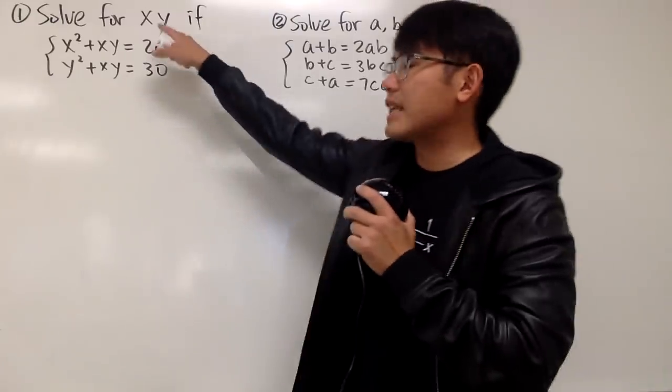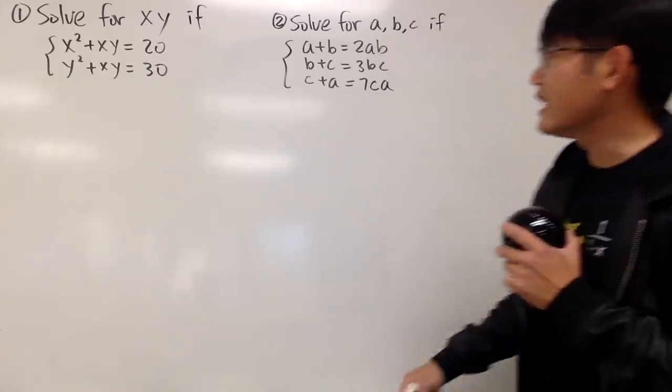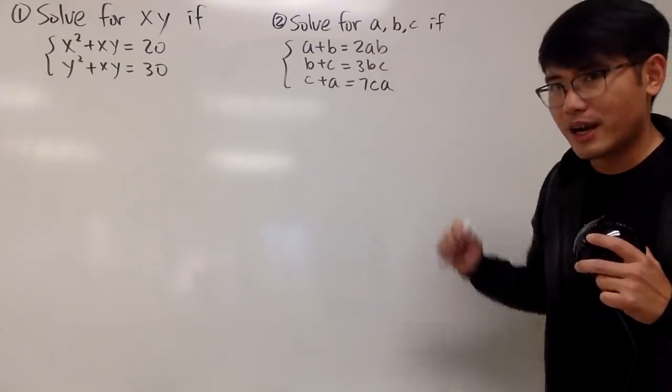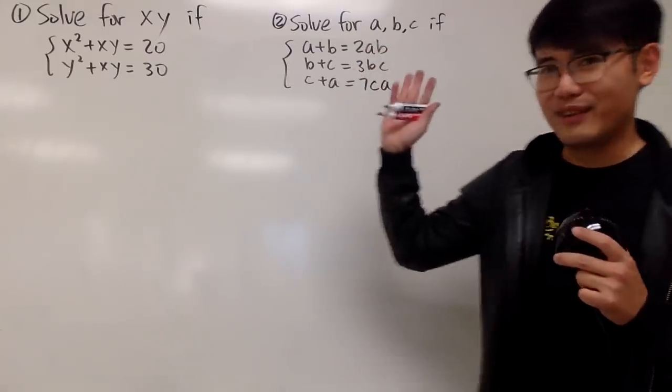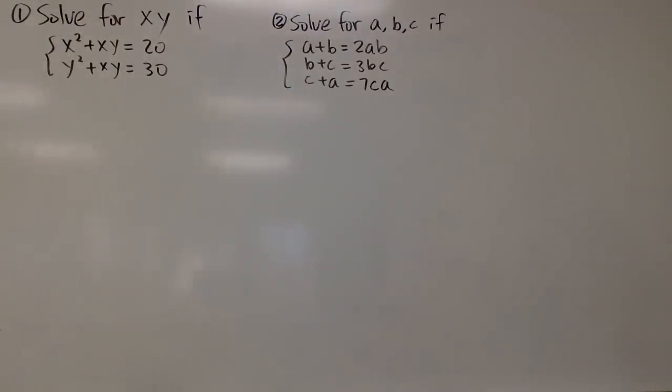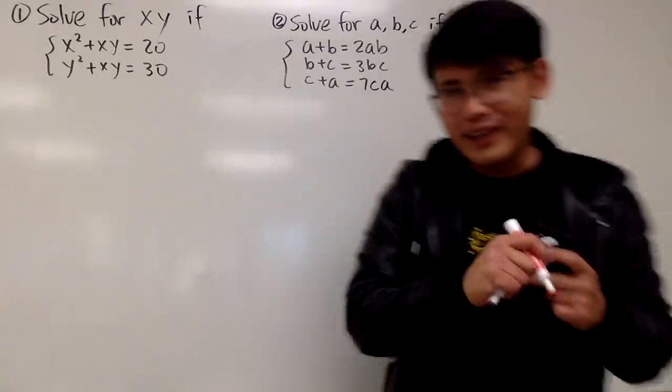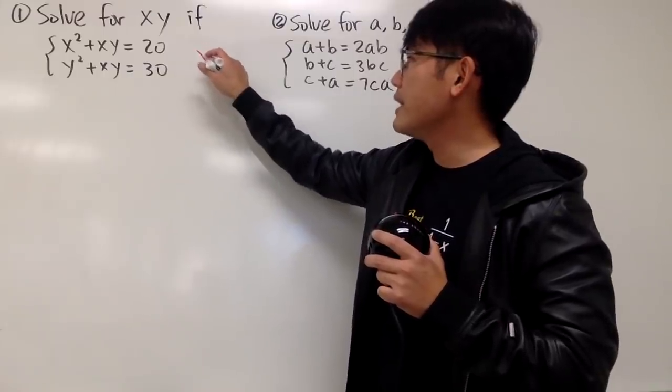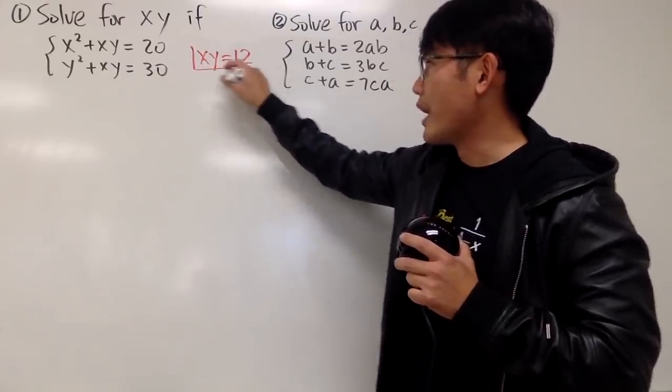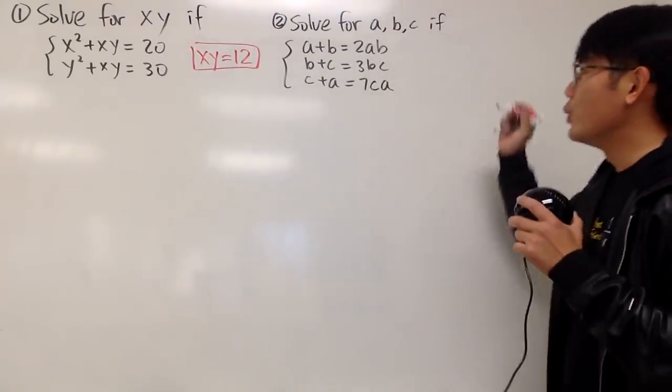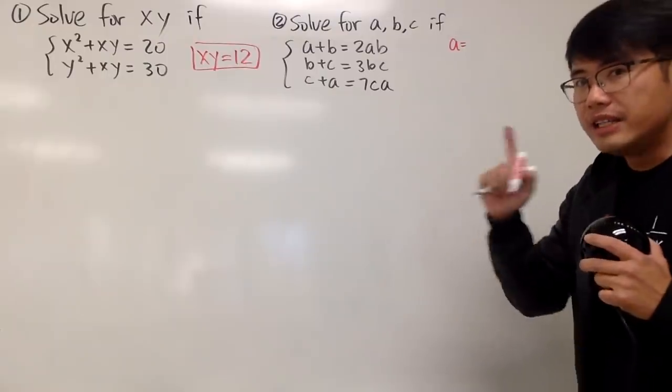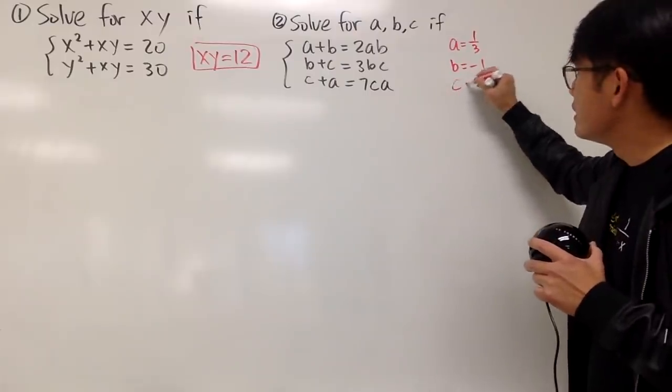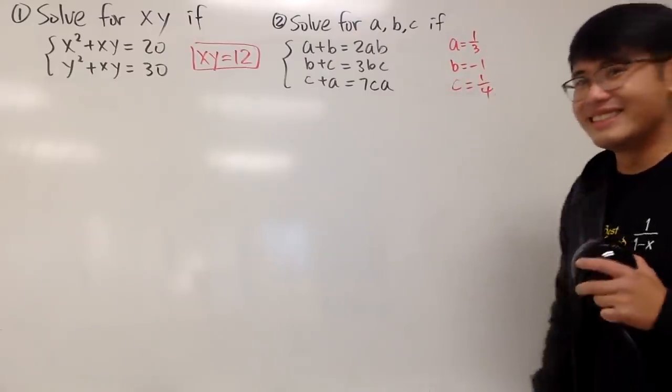Alright, for the first one, we are going to solve for x times y from this system of equations, and for the second one, we are going to solve for a, b, and c individually from this right here. And as always, please pause the video and try them first. Okay, hopefully you guys all have a chance to try it. And now let me tell you guys the answers. For the first one, we just want x times y, and the answer to that is 12. And for the second one here, we want a, b, c individually. The answer for a is 1/3, the answer for b is negative 1, and the answer for c is equal to 1/4.